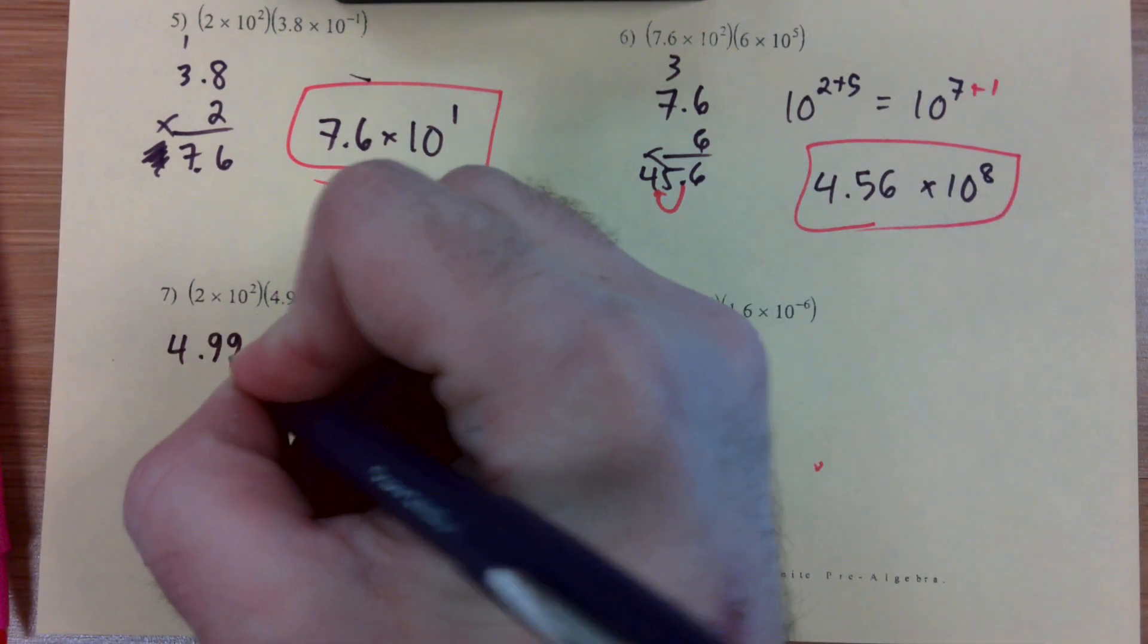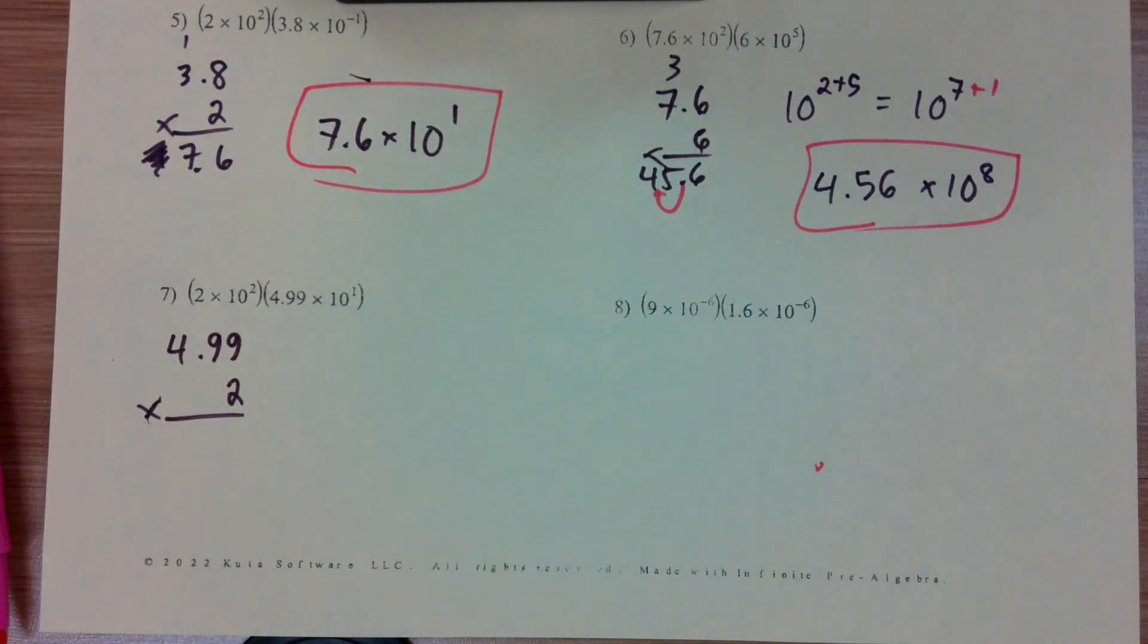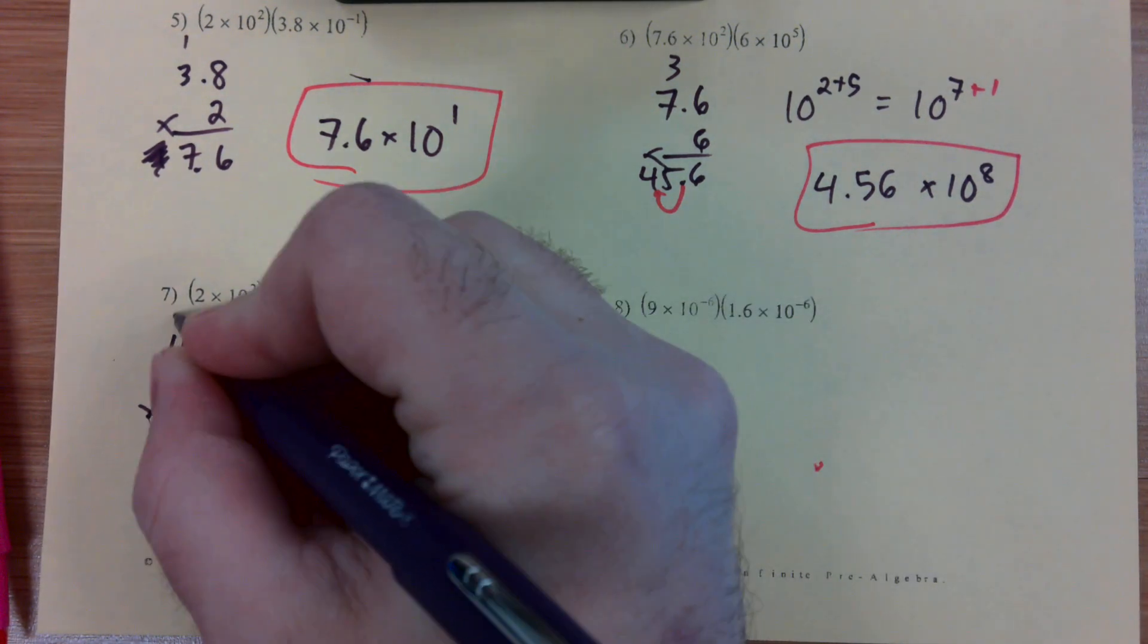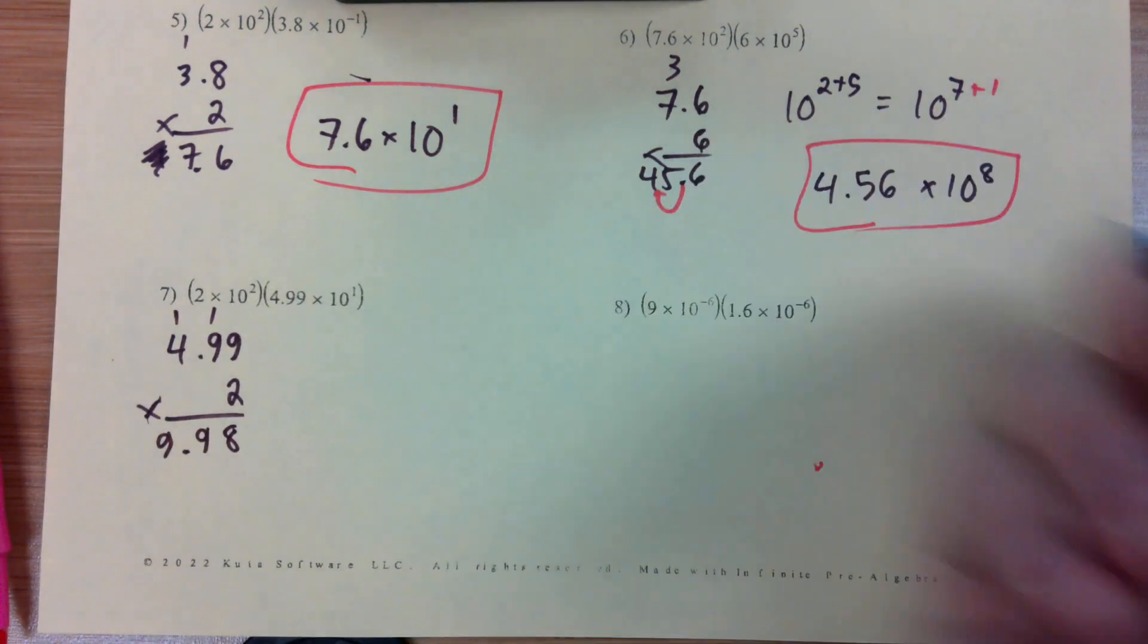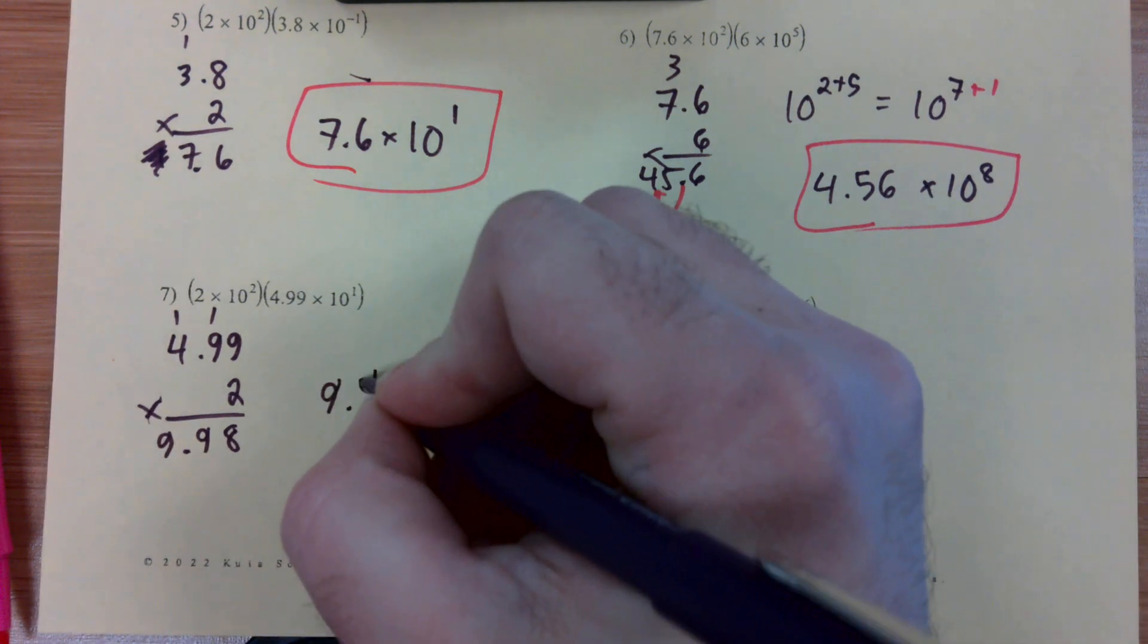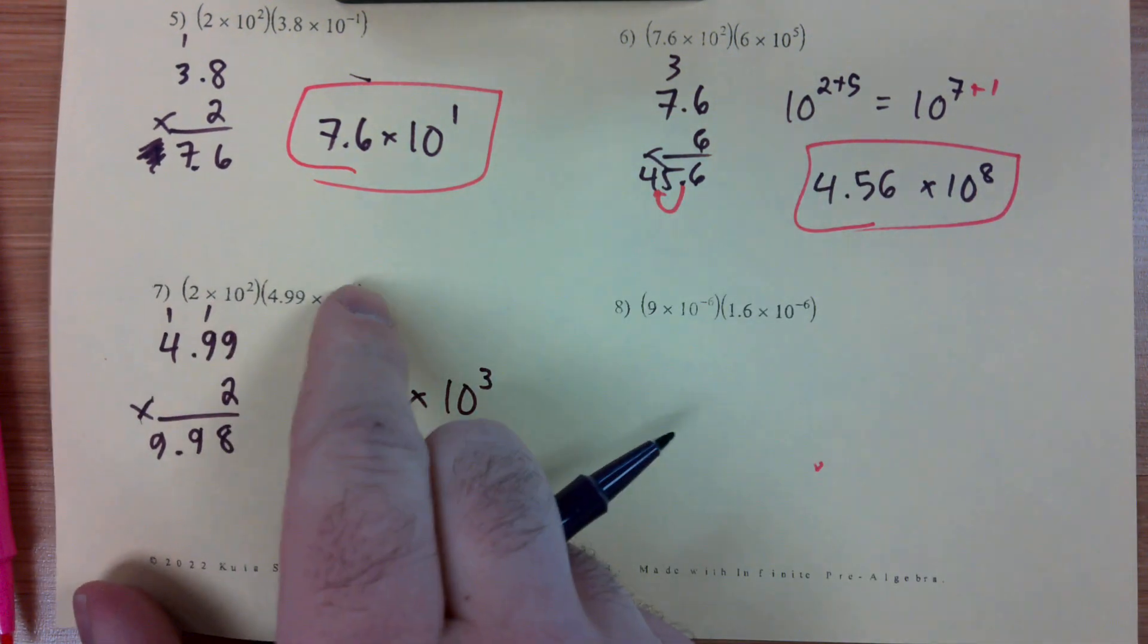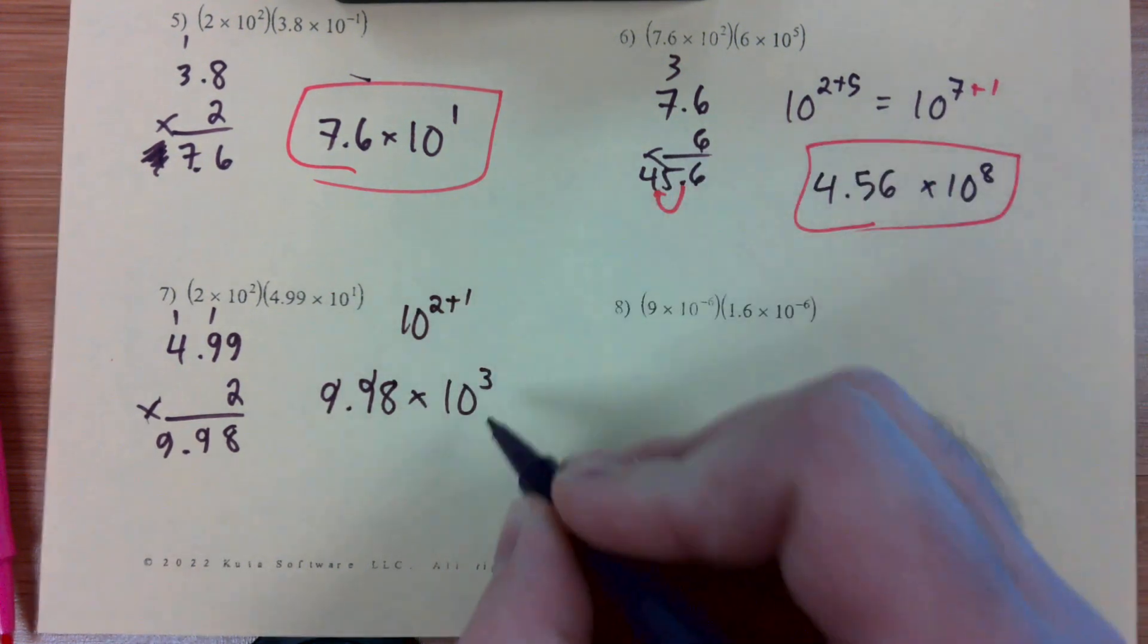4.99 times 2. Well, 4.99 is almost 5 and twice 5 is 10, so this is probably going to be just under 10, right? 18, 19, 2 times 8, 9. 2 decimal places, 9.98 times 10 to the 3rd. We got 2 plus 1 gives us 10 to the 3rd.